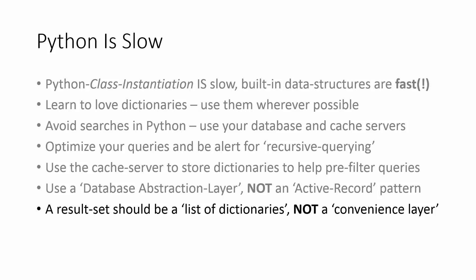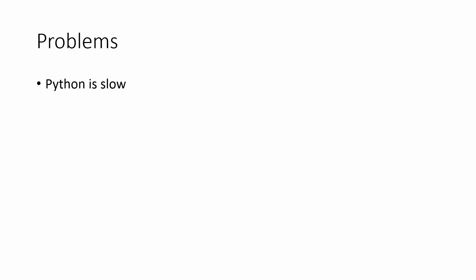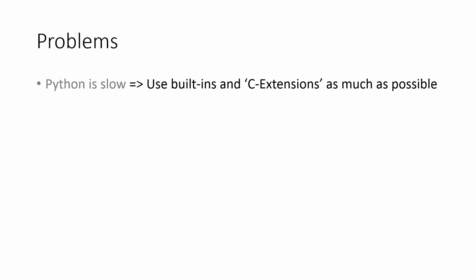So again, use C extensions. I can't stress that enough. Do as much of the computation as possible with C compiled extensions to Python and not in pure Python — we'll see this come up over and over again. Python is slow, so just use built-ins as much as possible, not complex data structures, and use C extensions as much as possible.